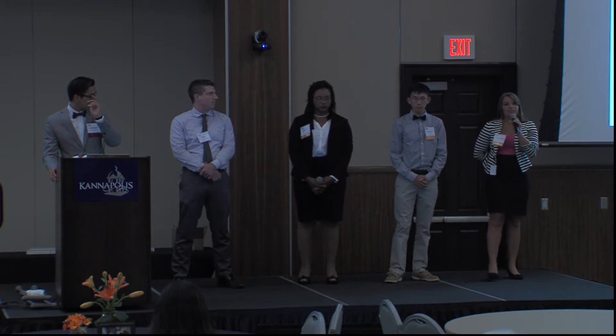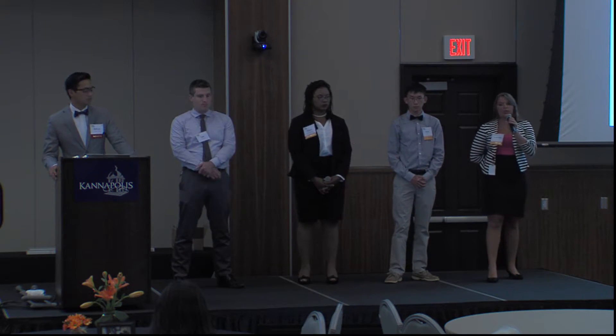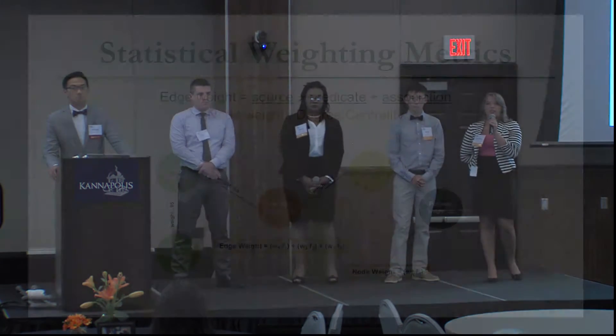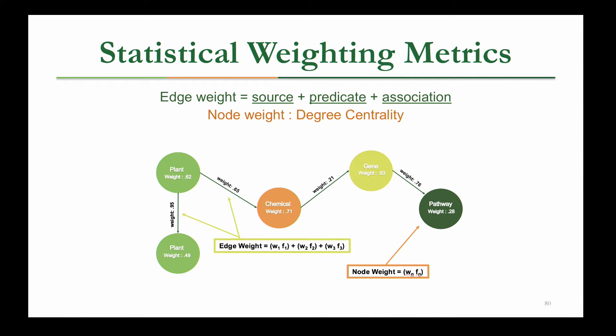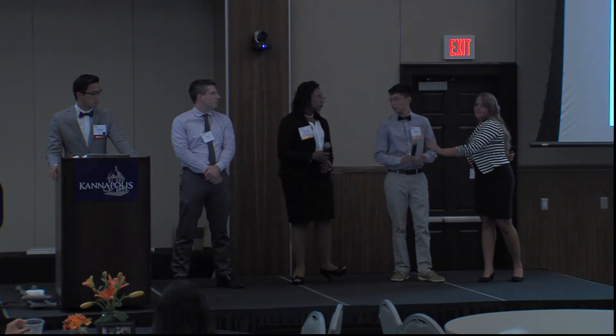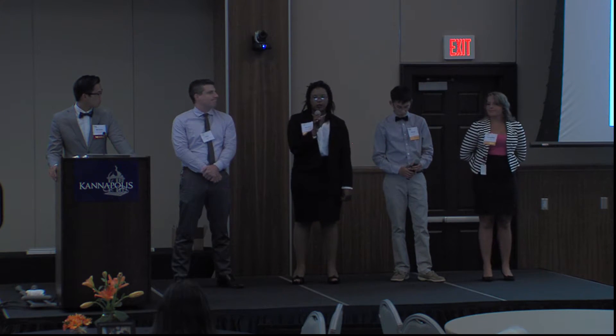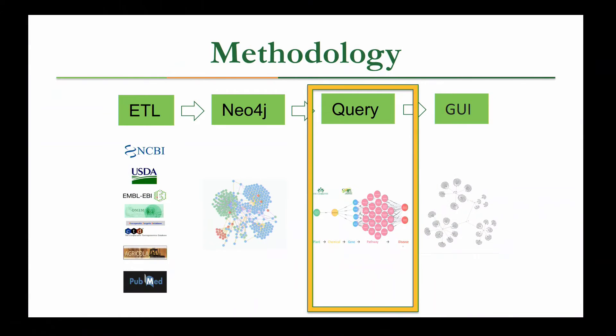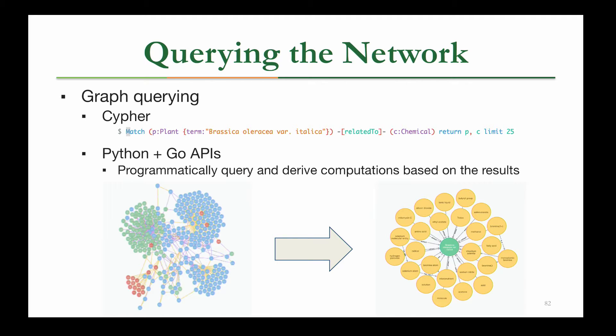Our edges and nodes don't mean much without adding strength or weight to them. Edge weights will contain a weight based on source — curated or text-mined — the predicate based on frequency, and the association based on a z-score. Node weight will be based on degree centrality, which means how many connections a node has. From there, we use linear weighting to create a ranked list of paths. After collecting our data and storing it in Neo4j, we retrieve it in its most simplified form by querying, then validate our methods using the gold standard, which can lead to new discoveries for biologists.